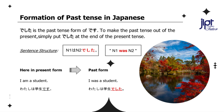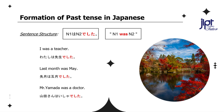Simply replace desu with deshita to make it a past sentence. Similarly, 'I was a teacher' will be: Watashi wa sensei deshita. Try and make some more sentences like this. Last month was May: Sengetsu wa gogatsu deshita. Mr. Yamada was a doctor: Yamada-san wa isha deshita.